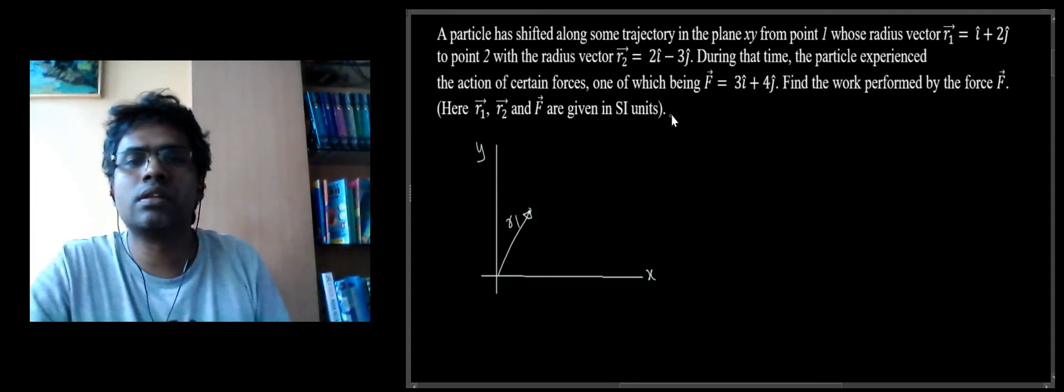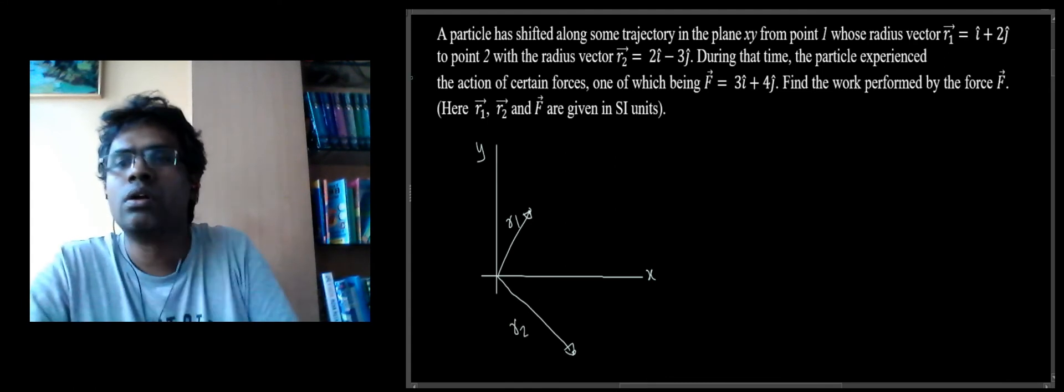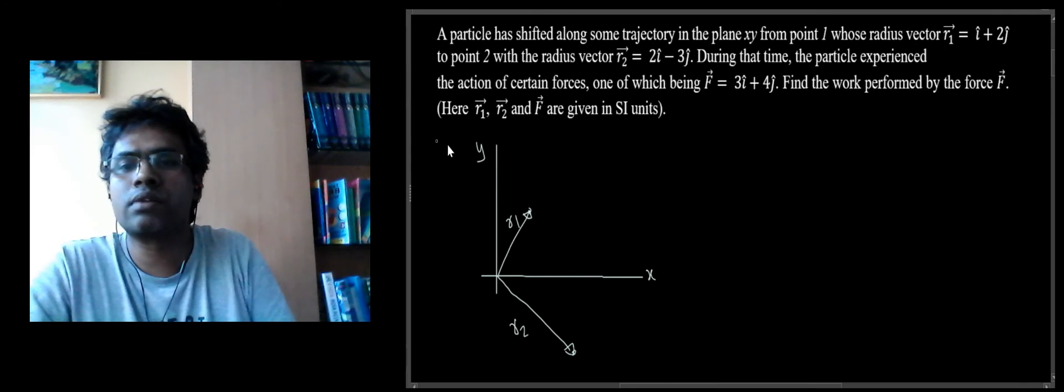The other position is 2 comma minus 3, that's here. Now to get the displacement vector, we just have to take the difference of these two vectors.